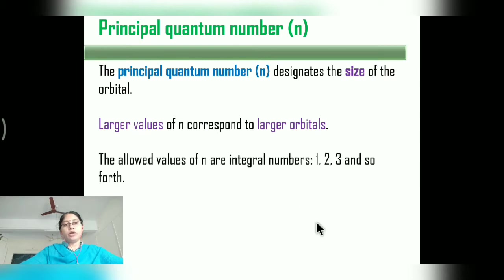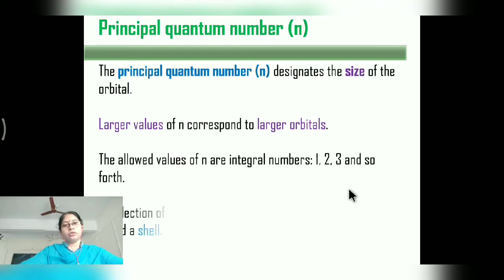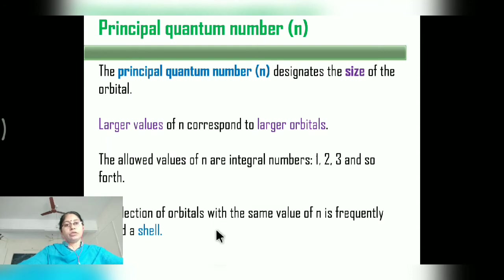The allowed values of N are 1, 2, 3, and so on — integer values. Orbitals that have the same value of N are collectively called a shell.